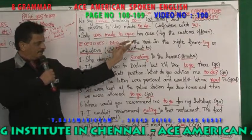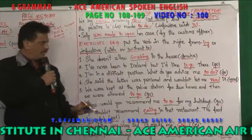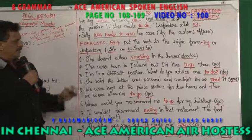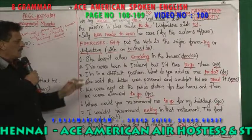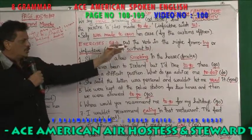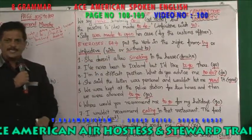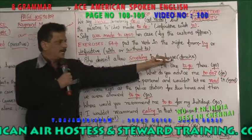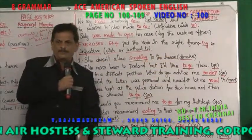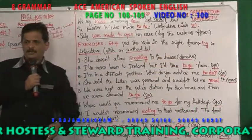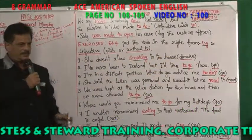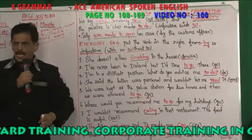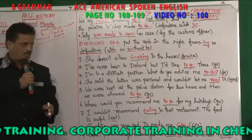Now the exercise: put the verb in the right form — ING, infinitive with or without 'to'. First: 'She doesn't allow smoking in the house.' After 'allow' without an object, you use the gerund — 'smoking'.